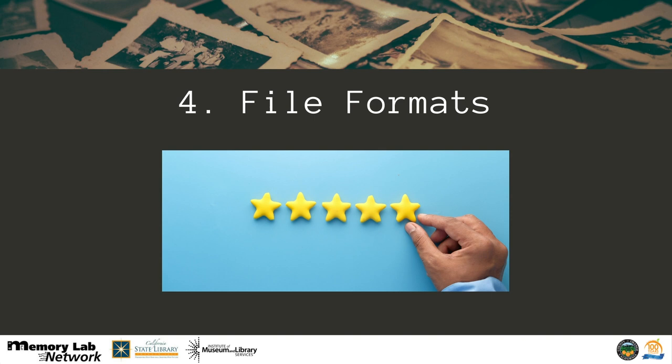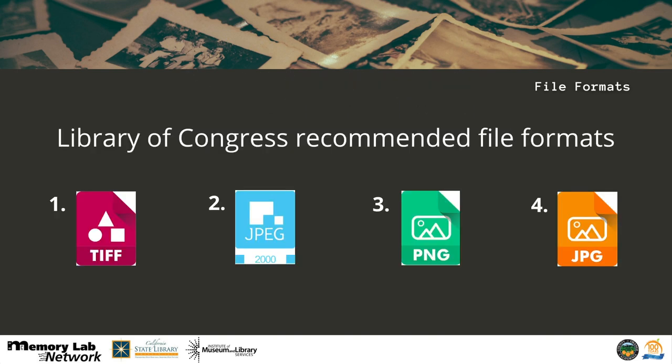Now let's talk about file formats. The format you use to save your files is very important. If at all possible, you should always opt to save your files in the highest resolution available. Here are the four Library of Congress recommended file formats. The top recommended choice is TIFF. A close second is JPEG 2000. Both of these formats are lossless formats, meaning they don't lose resolution or quality when compressed or uncompressed. If neither TIFF nor JPEG 2000 are available, then opt for PNG — there's some resolution and quality loss when compressed, but it's still a large enough file to maintain image quality. The last option is JPEG: a smaller file size, good for if you don't have a lot of storage space.